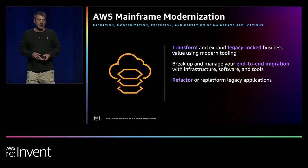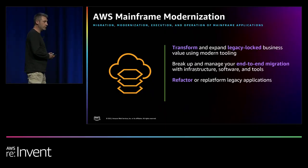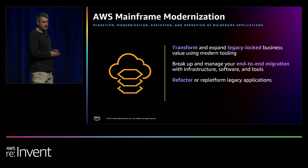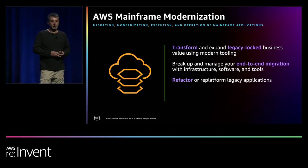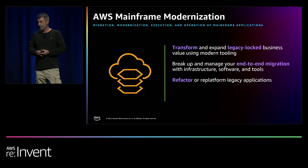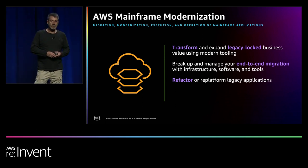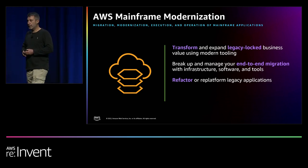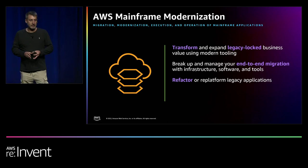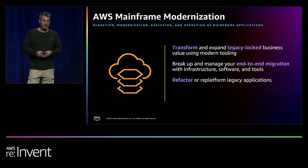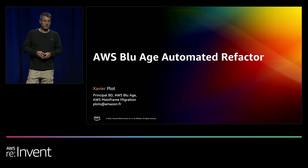The AWS mainframe modernization offering is articulated in two main parts: refactor and replatform. Those two different strategies are not competing against each other — they are two different solutions for two different problems. The one we are going to focus on today is the refactor one using the AWS BlueEdge modernization process.